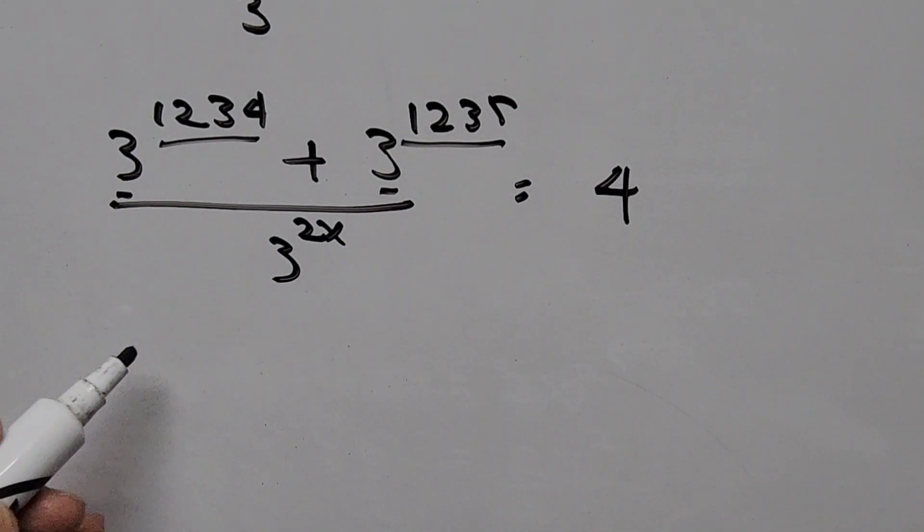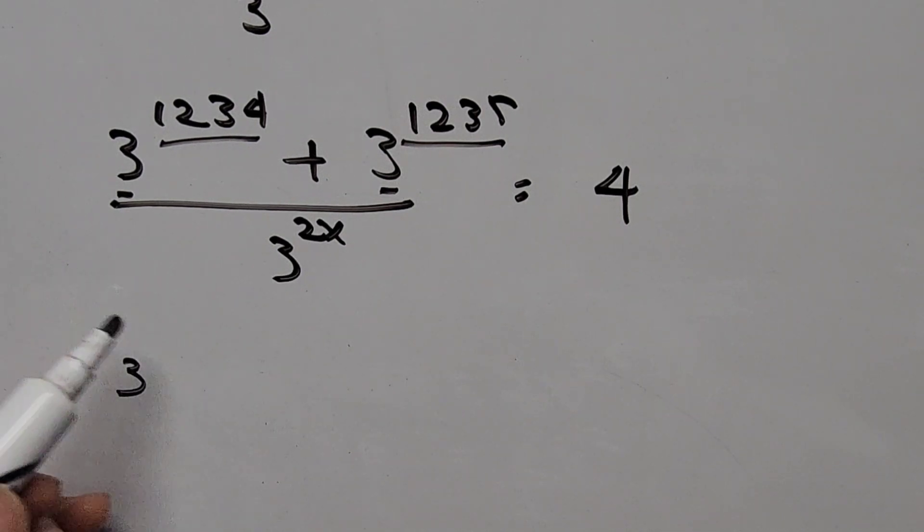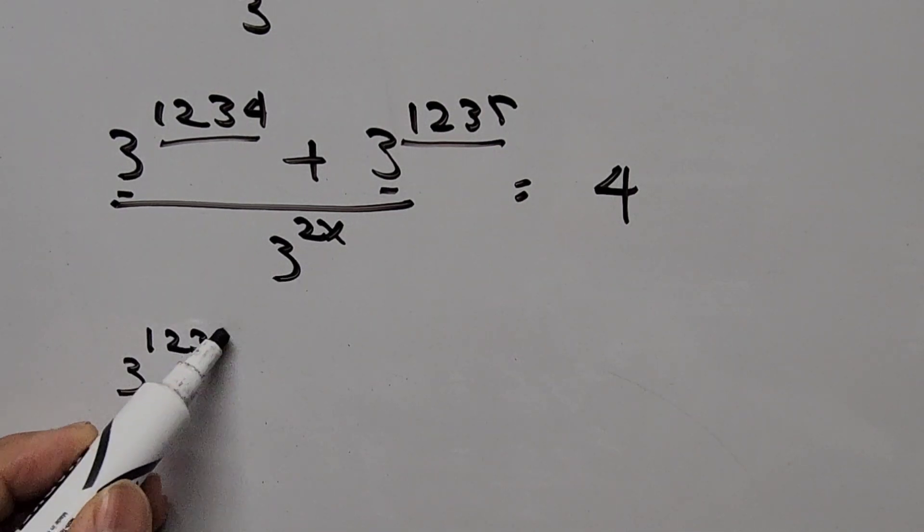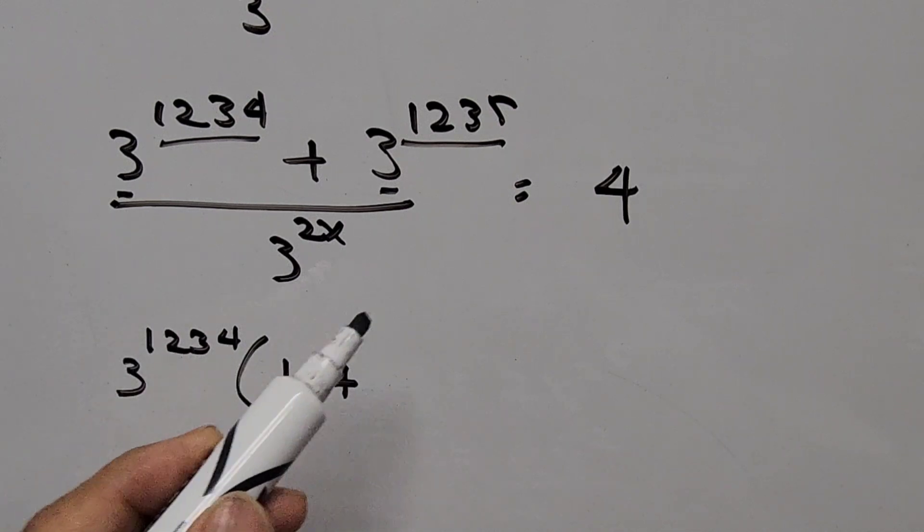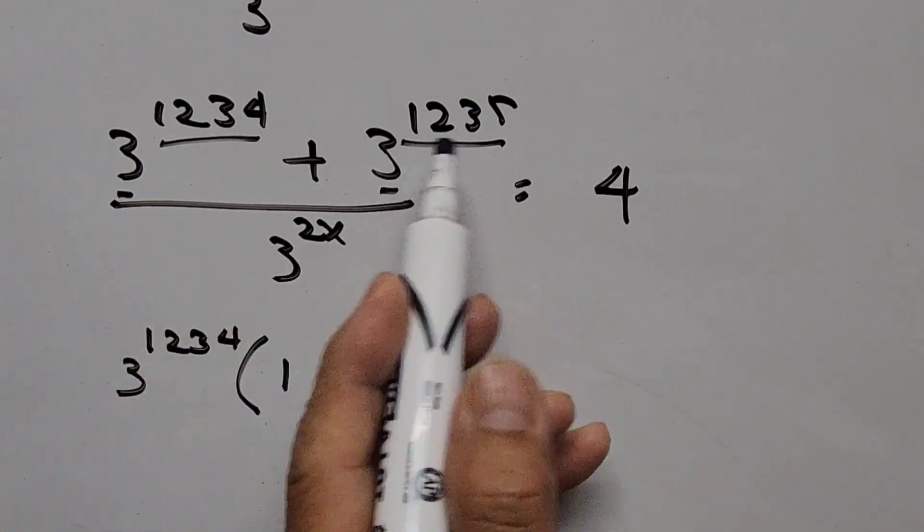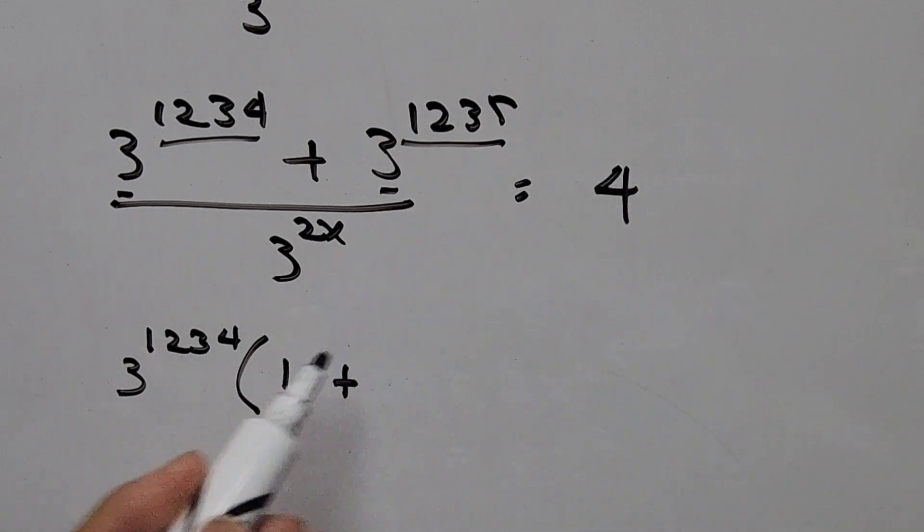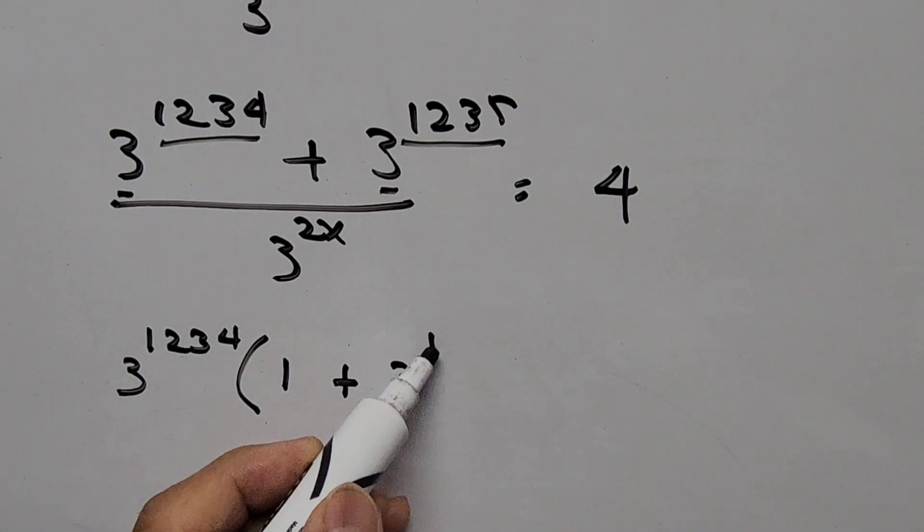So we have here now 3 to the power of 1234 times the quantity 1, then plus factoring 3 to the power of 1235 exponent, that will be 3 to the power of 1.